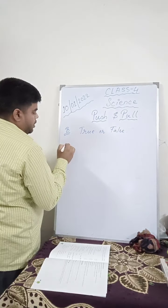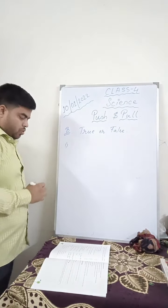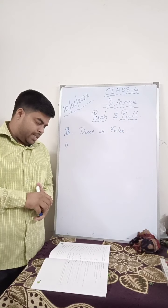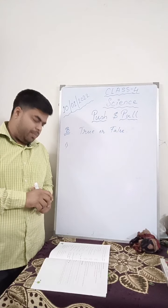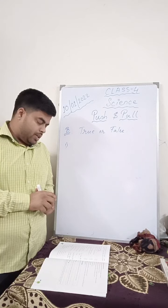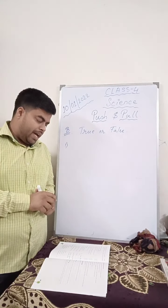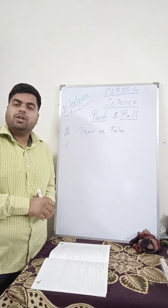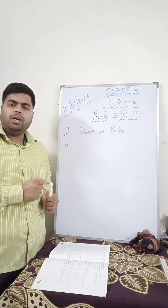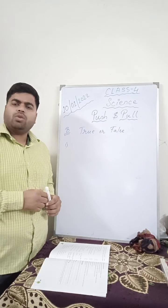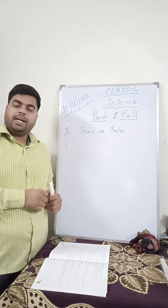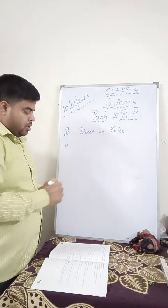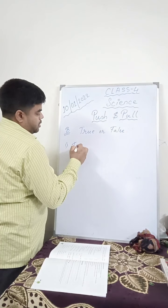Number 1. On pulling, an object will move away from us. So when you pull, the object is not going to move away from us — it is actually going to come towards us. So the answer is false.